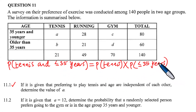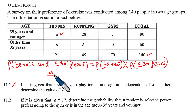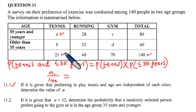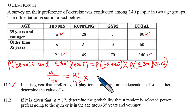Now substituting values: the probability of tennis AND 35 years and younger is A over 140, since A is the cell for tennis and the younger age group out of a total of 140. The probability of tennis uses the total tennis row, and the probability of 35 years and younger is 80 over 140, since the total for that age group is 80.